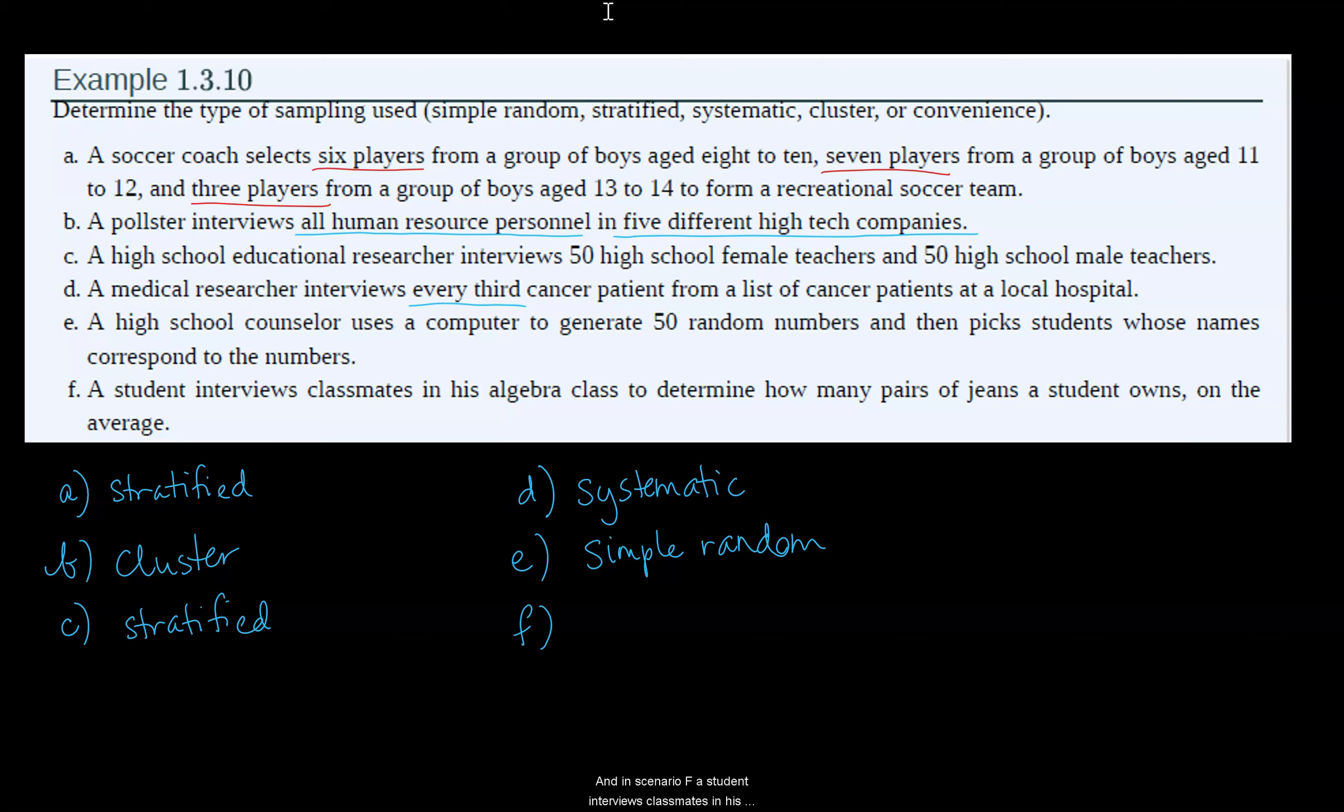And in Scenario F, a student interviews classmates in his algebra class to determine how many pairs of jeans a student owns on average. Since the student is only interviewing people in his algebra class and not looking at the entire school or the entire population of students, this is a convenience sample. He's only looking at his class and getting information from that class, so it's convenient.